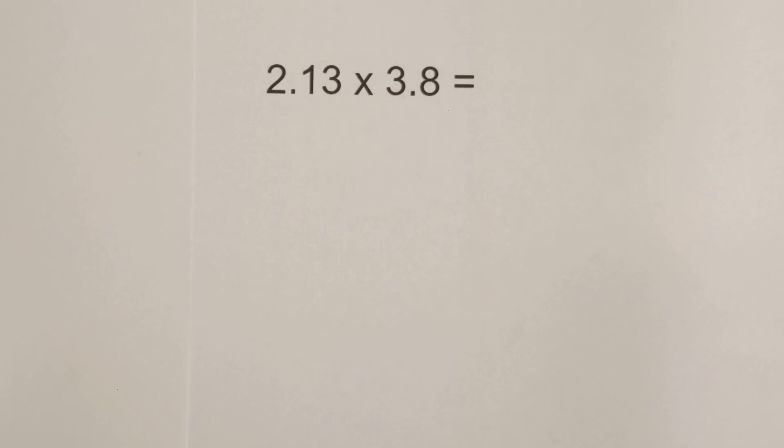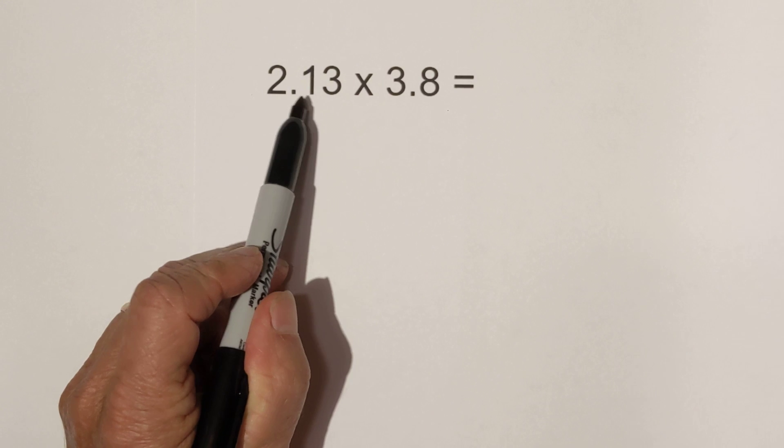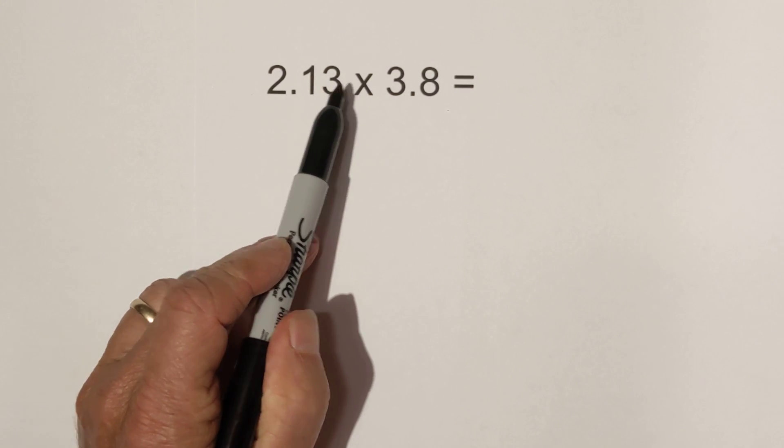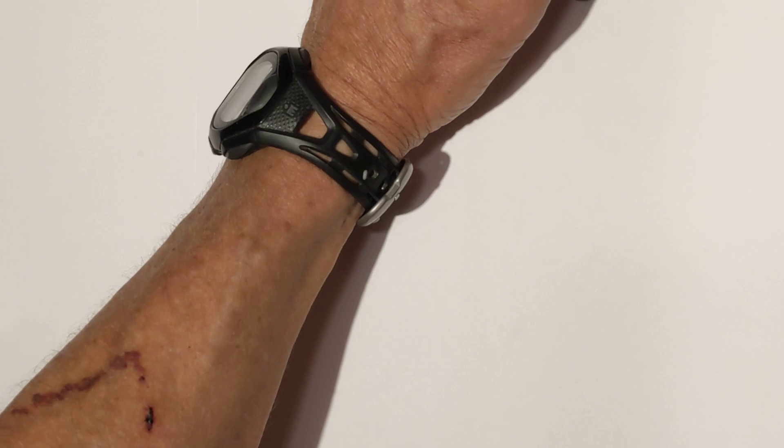Okay, step 1 remember we're going to count how many numbers are to the right of the decimal. We have 1, 2, 3. I'll write that right there. Now we just multiply as if there are no decimals.